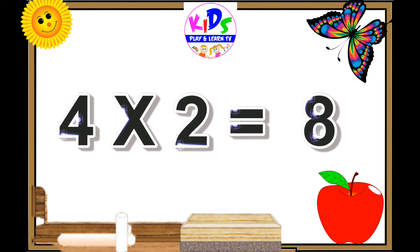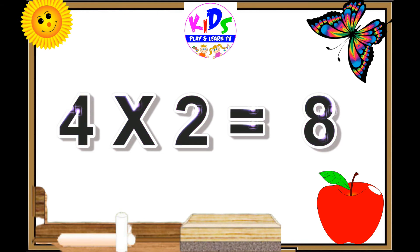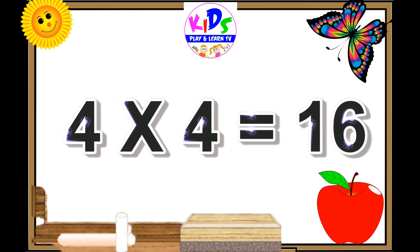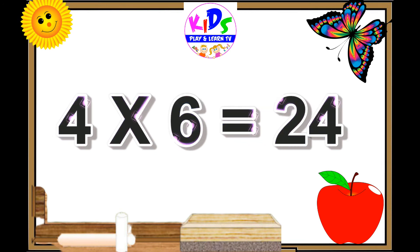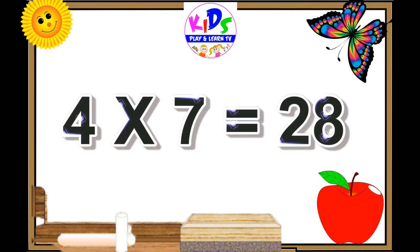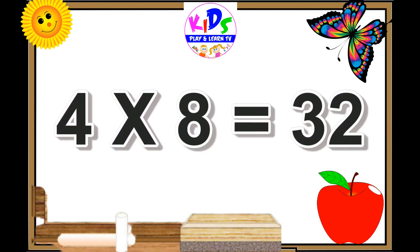4 ones are 4, 4 twos are 8, 4 threes are 12, 4 fours are 16, 4 fives are 20, 4 sixes are 24.